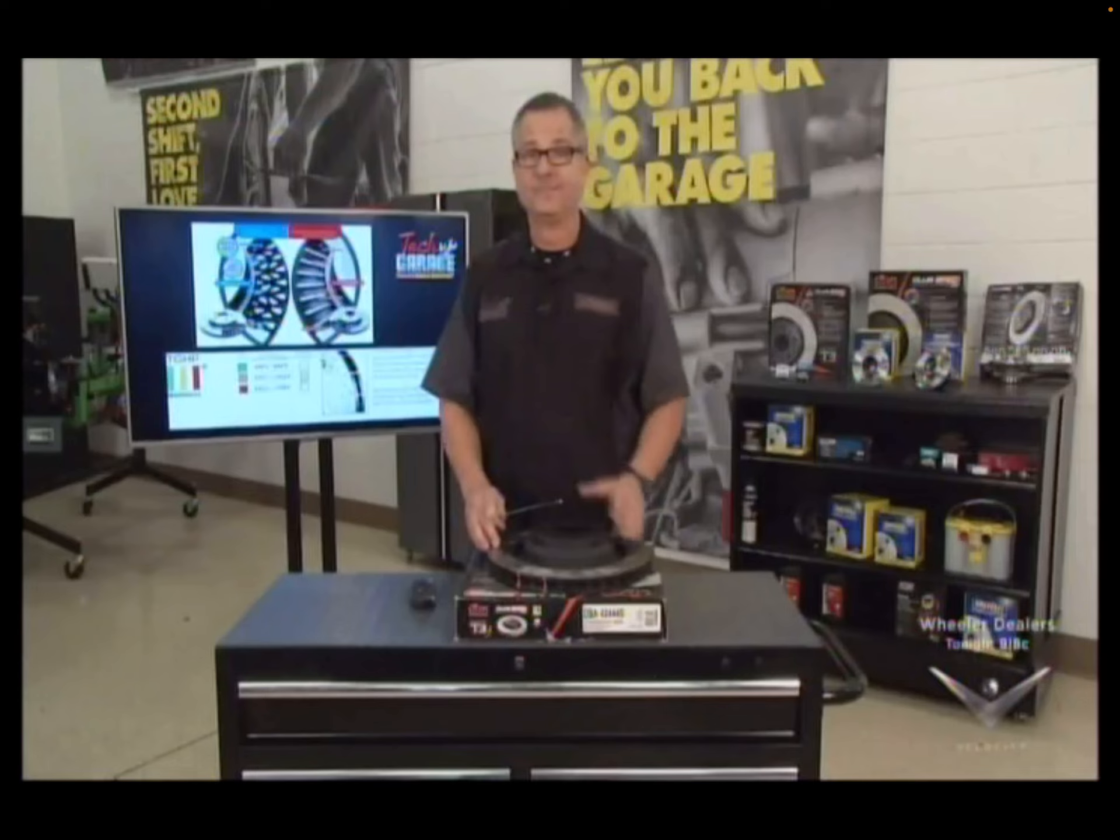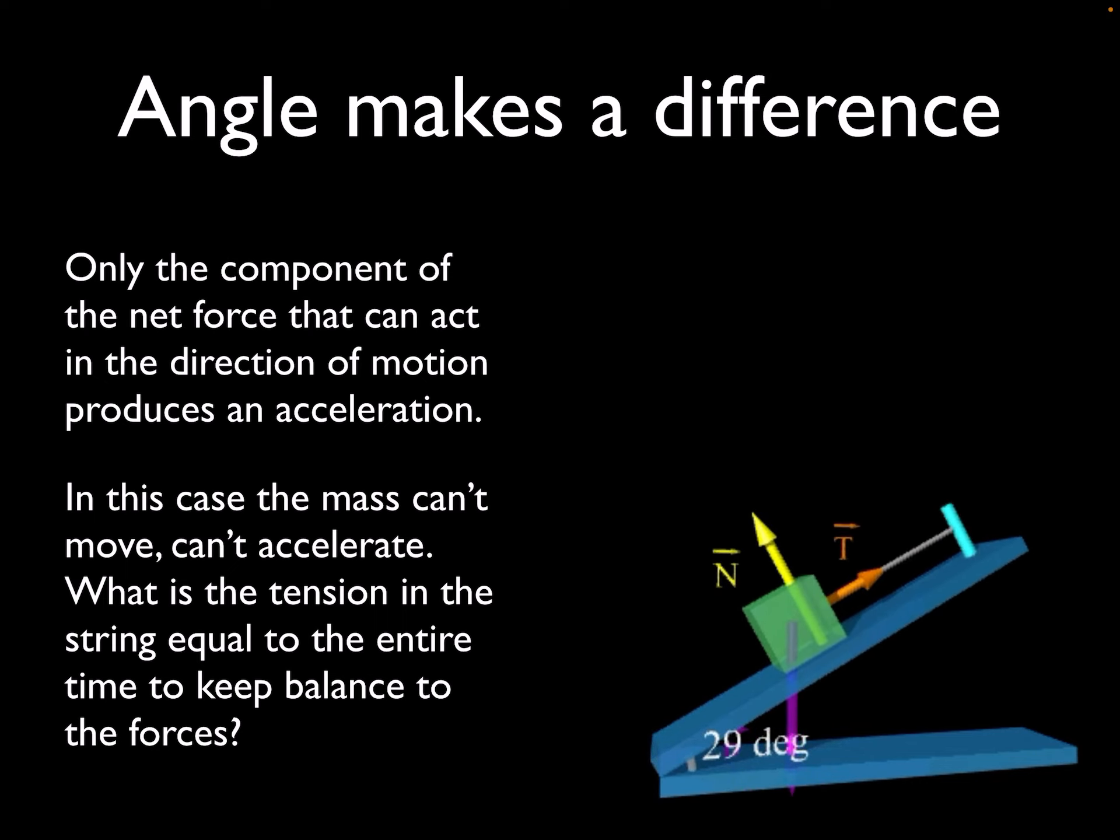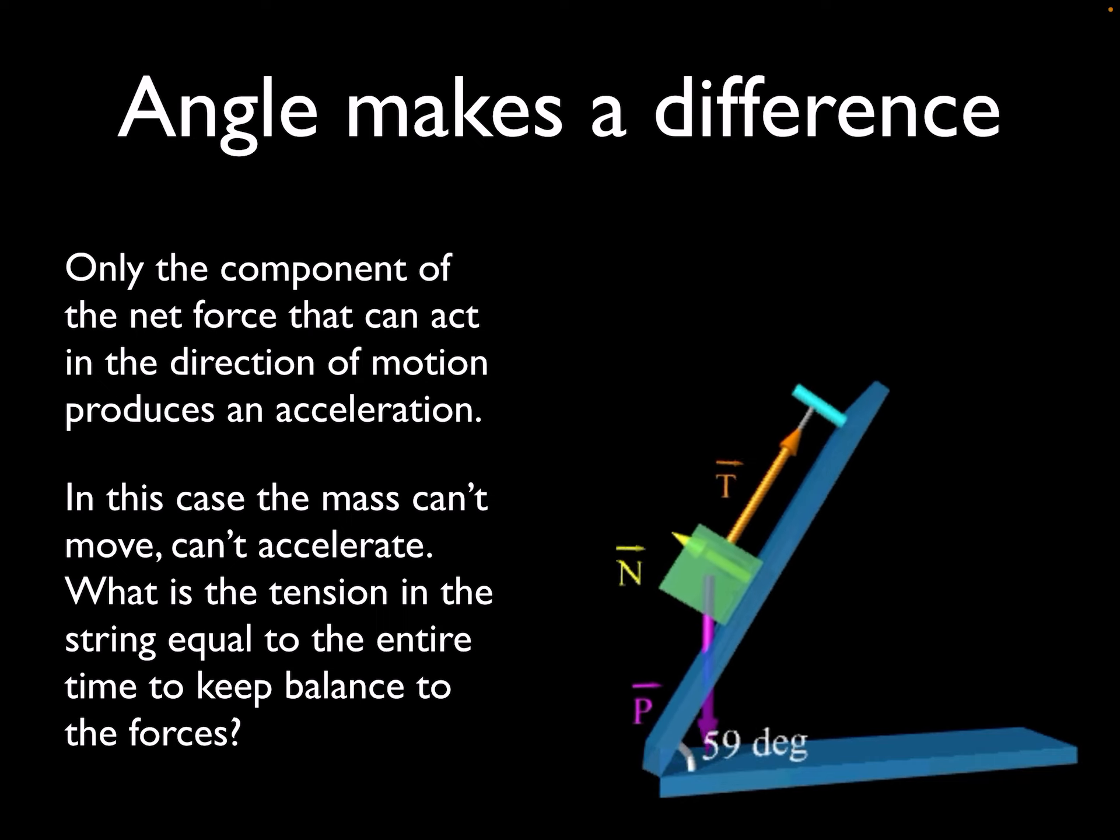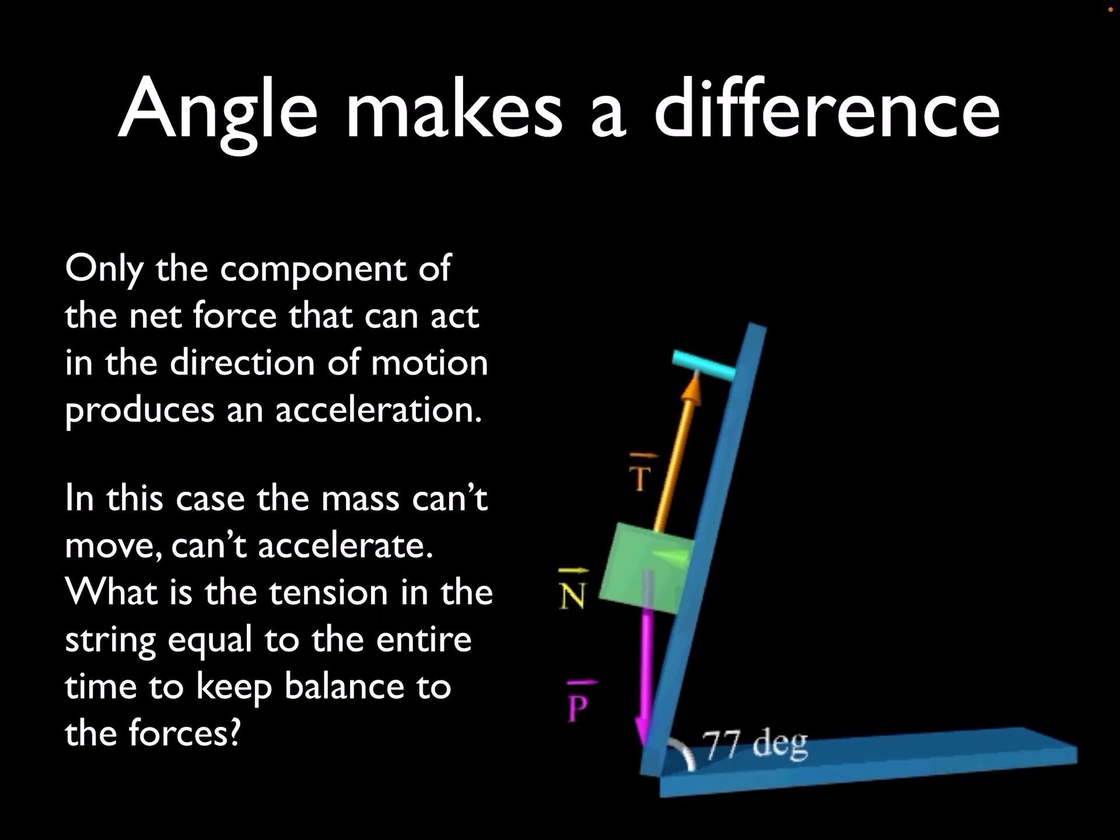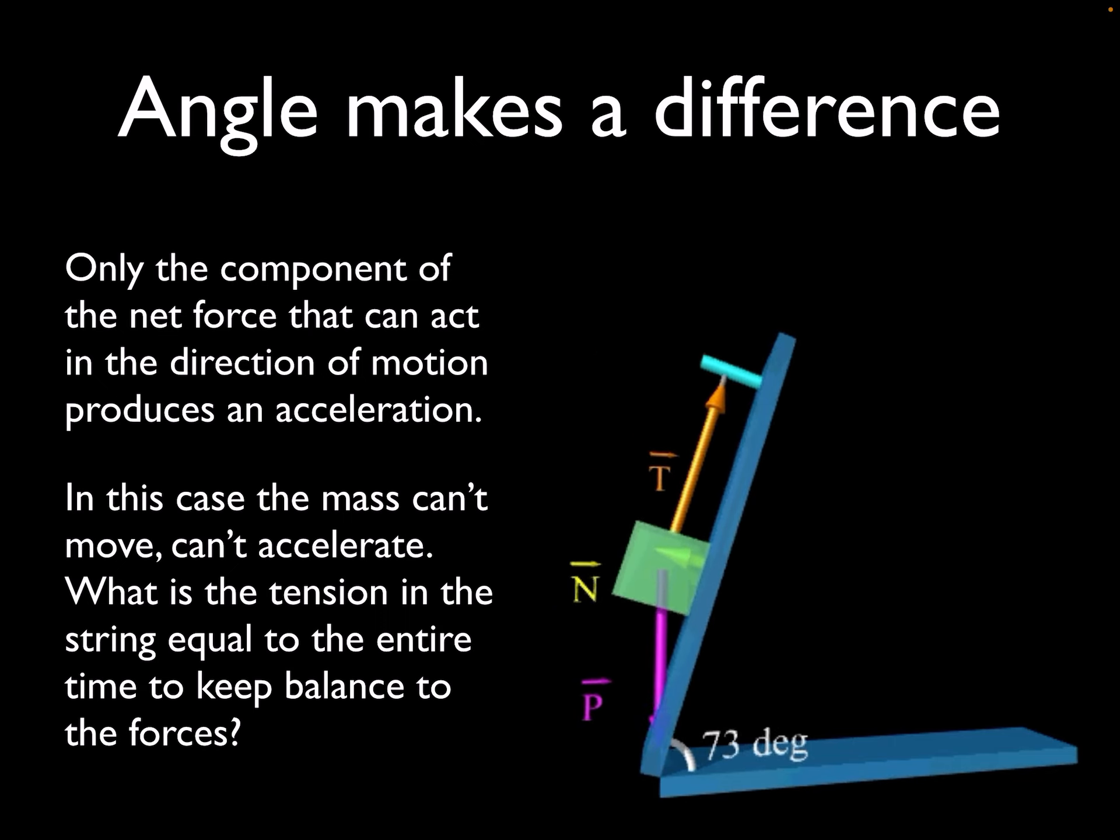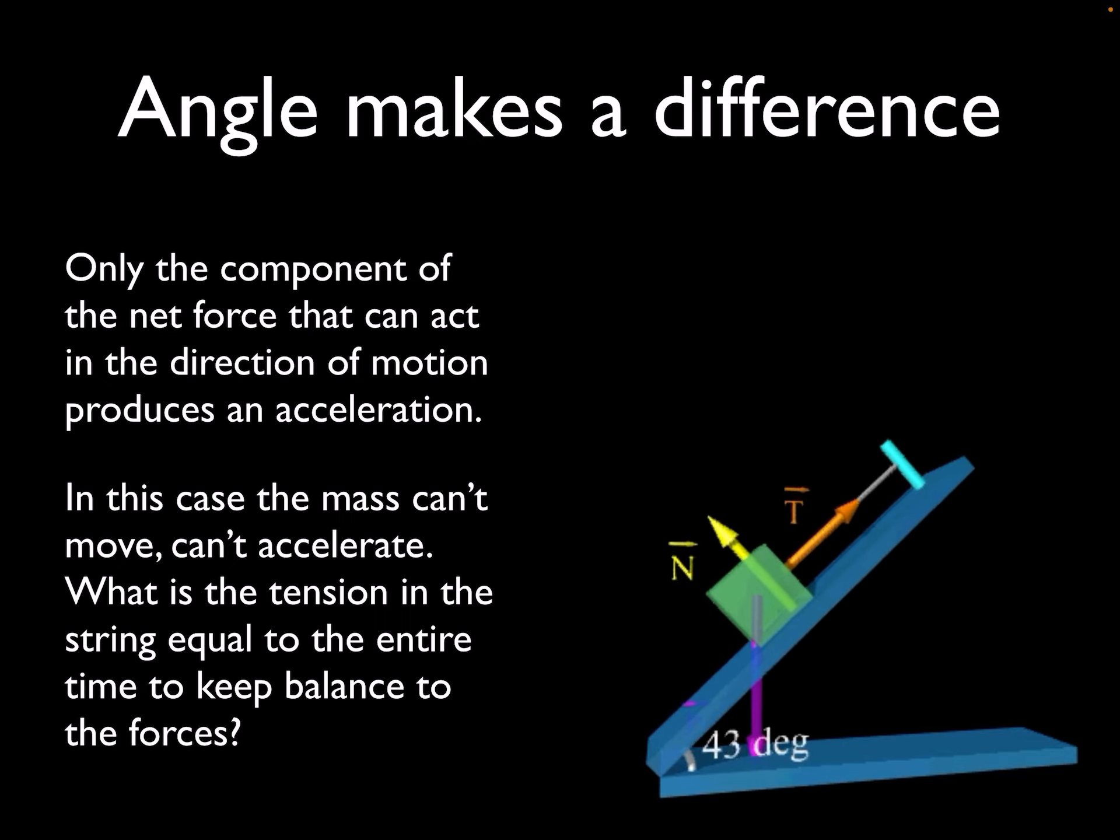So friction's a force that robs you of your motion, and it does it with pretty much everything by converting the energy of the object, your car going down the road, into heat. And then the heat gets dissipated into the environment, and all the forward motion of your car stops and becomes heating up the air around you. Pretty cool, actually.